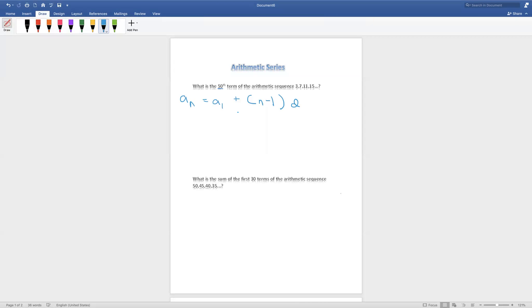You're probably wondering what does n, what does d stand for? an is the last term, or the 50th term in this case, and a1 is the first term, 3. n is how many numbers there are, and we need to find the 50th term, which means there's 50 numbers. And d stands for the common difference.